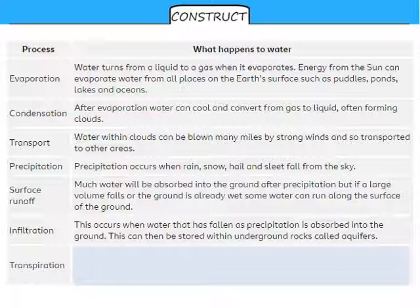Infiltration is another name for percolation as far as what we need to be concerned. This occurs when water that's fallen as precipitation—either as rain or snow or hail or sleet—is absorbed into the ground. It can then be stored underground in rocks called aquifers. Those of you who study geography probably have a greater knowledge than you will need to have for biology and the water cycle about aquifers.